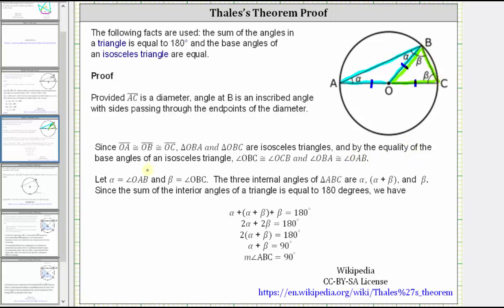By the equality of the base angles of an isosceles triangle, angle OBC is congruent to angle OCB, and angle OBA is congruent to angle OAB. We let alpha equal angle OAB, so both base angles of the obtuse isosceles triangle are alpha, and let beta equal angle OBC, so both base angles of the acute isosceles triangle are beta.